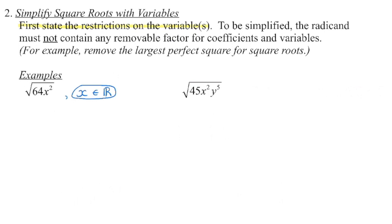Now when we go to simplify, 64 is a perfect square. If I take the square root of 64, I get 8. In terms of the variable, x squared also happens to be a perfect square. The square root of x squared is x. So 8 times 8 gets us back to 64, and x times x gets us back to x squared. There's nothing left in that radicand, so the square root of 64x squared is just 8x.